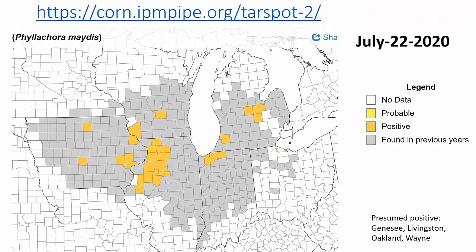Here's where we are for 2020. You can go to this website — just Google corn IPM, click through the links for IPM pipe, and click through the links for tar spot. Essentially it's across lower Michigan, and I fully expect it's present in counties around Detroit, we're just putting in there when we find it this season. You should get out and scout, especially now. Now's a really good time to be watching for this disease.